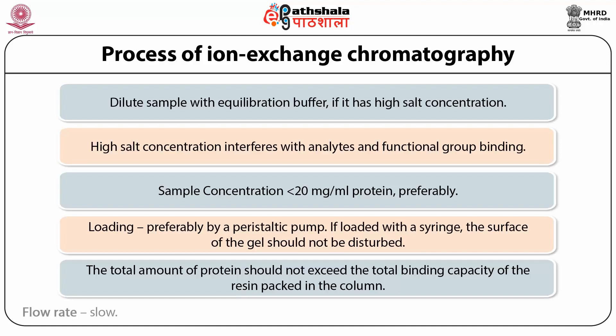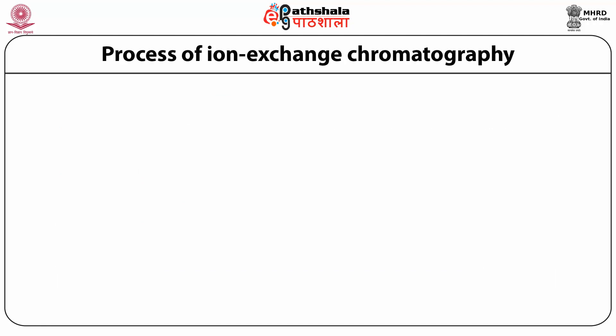The flow rate should be slow when loading the column, as this helps achieve better binding. Washing of the column and elution of bound proteins can be done at a comparatively higher flow rate.